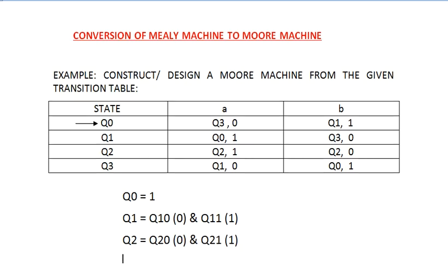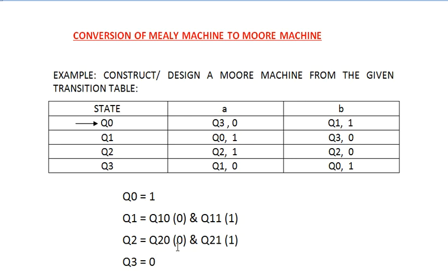Moving to the next one, Q3 — looking into Q3, it is having output 0 here and output 0 here. So Q3 has a constant output of 0. This completes step two. In step one we confirmed that this table is a Mealy machine table, and now we have to convert it into a Moore machine.